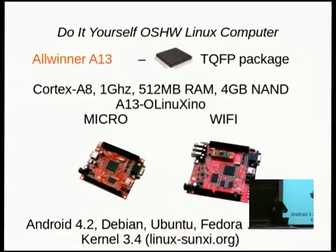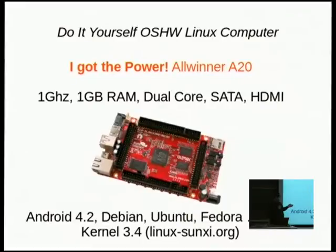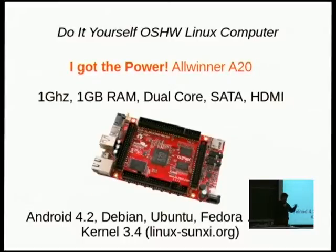People then started comparing with Raspberry Pi again, saying it doesn't have HDMI or other features. So we decided to make something powerful. This is our most powerful board at the moment — dual core, with SATA, HDMI, running at one gigahertz with one gigabyte of RAM, outperforming the Pi in every way. But of course, it is far away from do-it-yourself in this form and package.